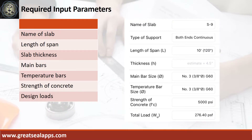Enumerate input parameters required. Name of slab: S9. Type of support: both ends continuous. Length of span: 10 feet. Slab thickness: 4.5 inches. Main bars and temperature bars: 3/8-inch diameter at grade 60. Strength of concrete: 5,000 PSI. And total load: 276.4 PSF.